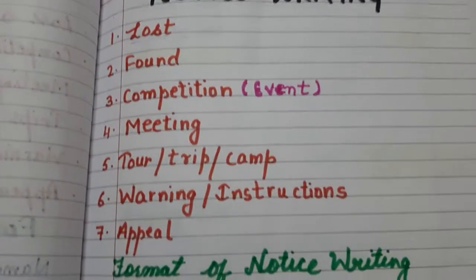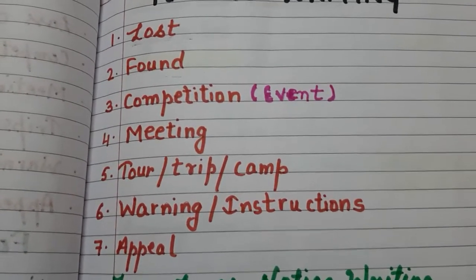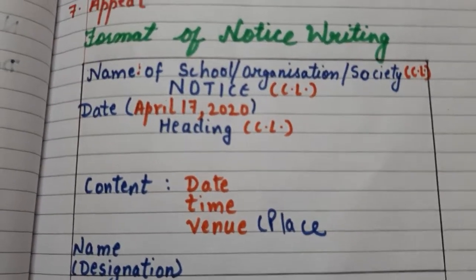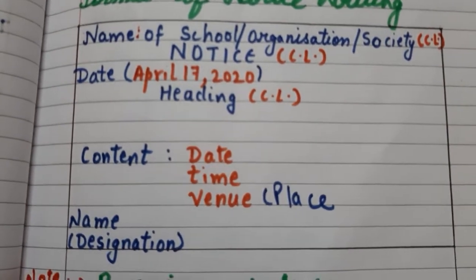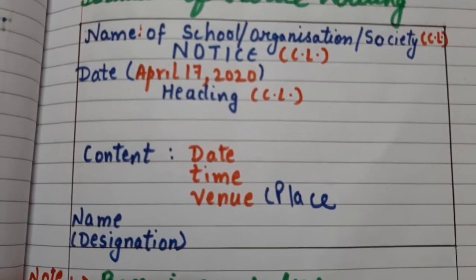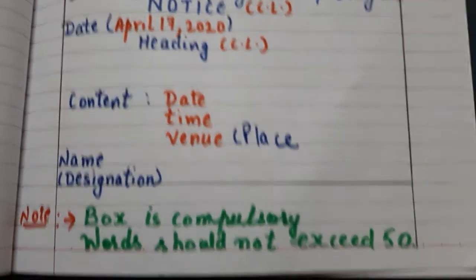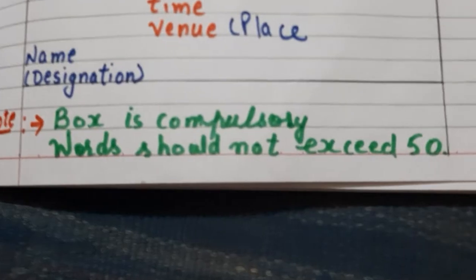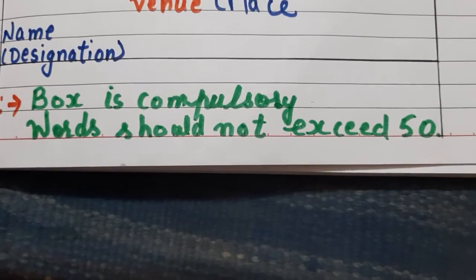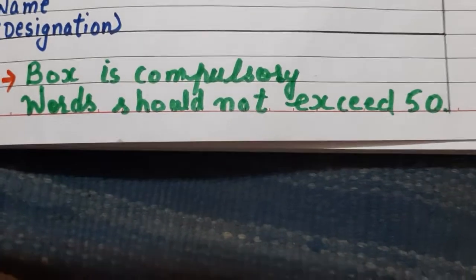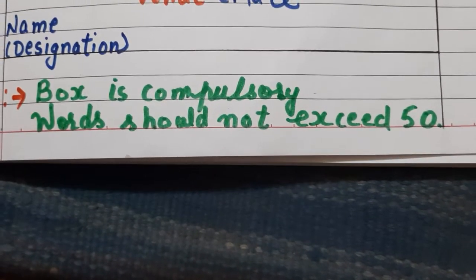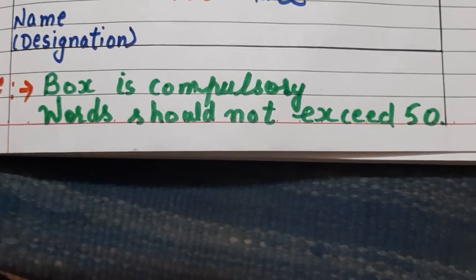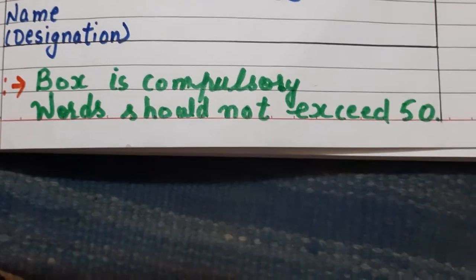Our last point is left, that is appeal. Firstly, see the format. I have already told you that only content will change, everything will be same. Two more things were there: one is boxes are compulsory, and second, word count should not exceed 50. I am telling this again and again because still some students are not following these points.